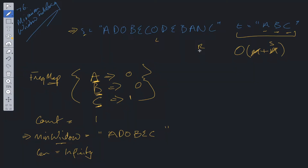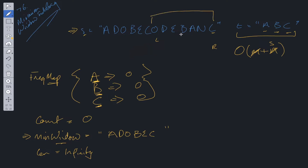We repeat the process on the right side. N is not in the frequency map. The right pointer reaches C, which is in the map — we decrement C to zero and decrement count. Now count equals zero so we have a current minimum window substring. We check if it's less than 'ADOBEC' — it's not. We check the left pointer value — not in the map, so we move along.